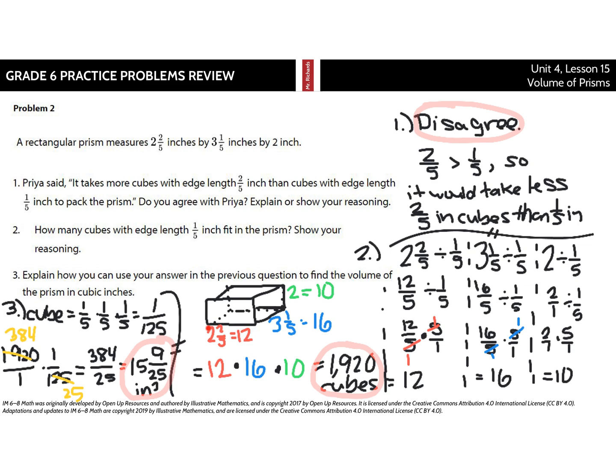And so this side here that's two and two-fifths takes up twelve cubes. This side that's three and a fifth has sixteen cubes. This side, that's two, takes up ten cubes of these one-fifth inch cubes. Then, if this is twelve, this is sixteen, and this is ten, multiply those together. Twelve times sixteen times ten is one thousand nine hundred twenty cubes, and that's a lot.